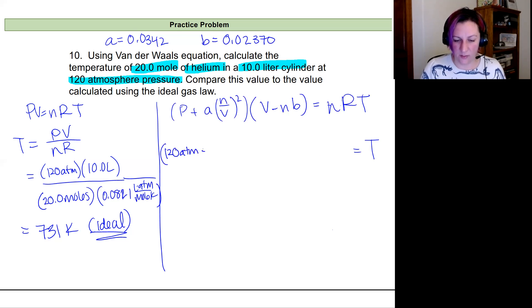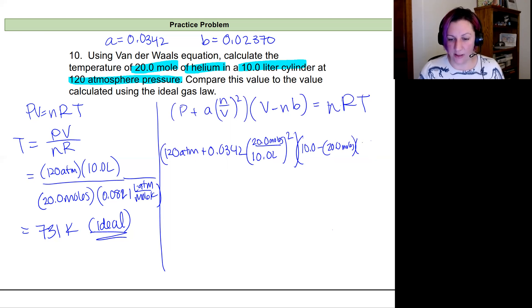We have 120 atmospheres plus our 0.0342, all times our 20 moles. Divided by our volume squared. Now that's all times our volume minus its correction value. So that's our 10 liters minus our moles of 20 moles. I need a little more space here. Times our B correction factor.